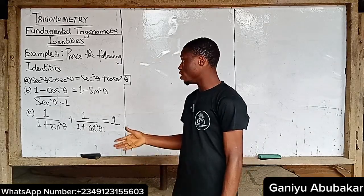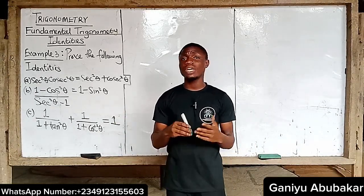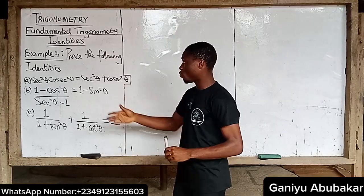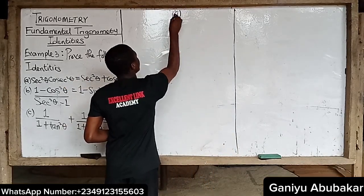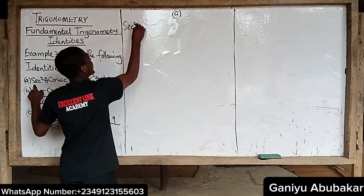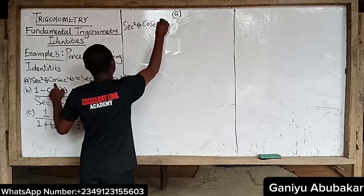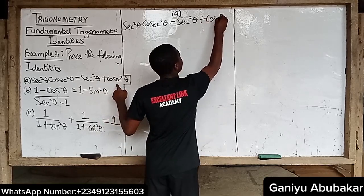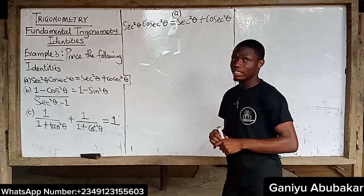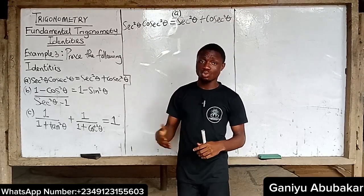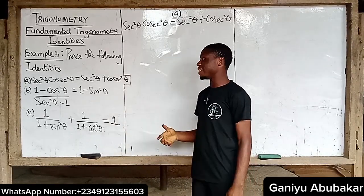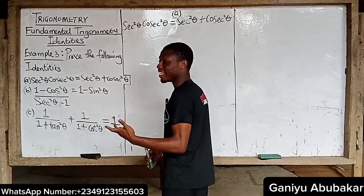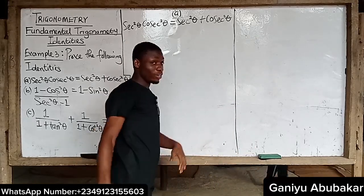Try to watch the previous videos before you dive into this concept. Let's start with question A. For question A, we have: sec squared theta times cosec squared theta is equal to sec squared theta plus cosec squared theta. The idea is that we are trying to prove the left hand side equal to the right hand side.